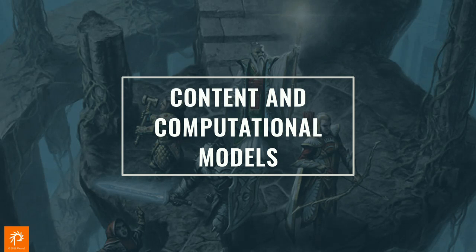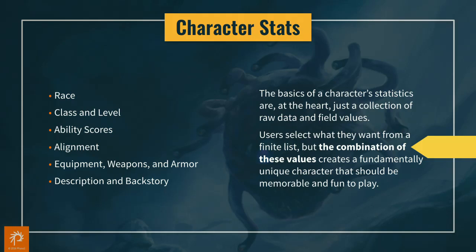Regardless of which input methodology we choose, we want to focus on managing as little user input as possible and calculating the rest in order to display a fully developed D&D character. Now that we know what content we need from the user and what we need to print out, we need to do some gap analysis between input and output and identify what's going to be calculated from user input. If you look at a character's stats, you can determine what's computed versus what's entered, and then build the content model for the character. You have race, class and level, ability scores, alignment — all of these matter in terms of your character's stats and to the game itself.